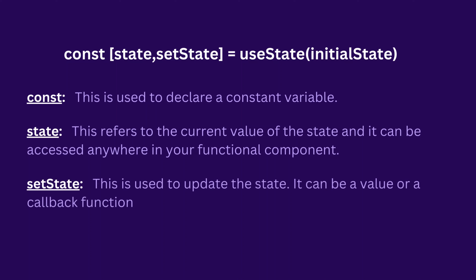Now the next thing is setState. This is used to update the state. It can be a new value or a callback function — we'll explore this better when I explain this in the code editor. Just know it is used to update the state. It can also be called anything, but the common convention is 'set' followed by whatever the name of the state is. For example, if you call your state 'name', the setState will be 'setName' with a capital N. That's just the common convention and makes it easy for developers all over the world to understand.